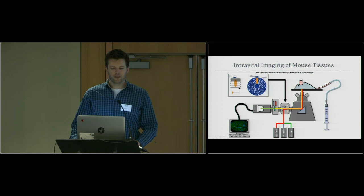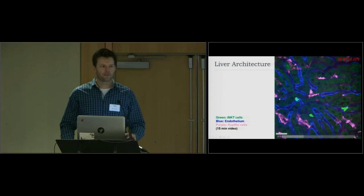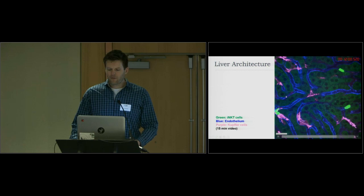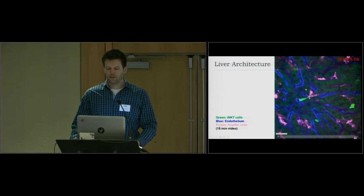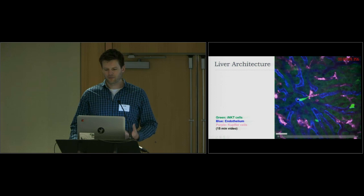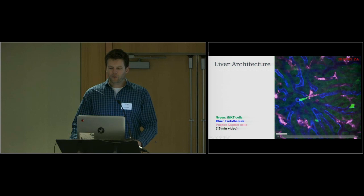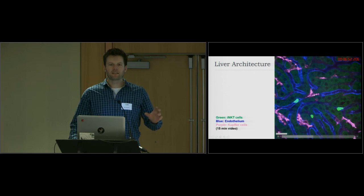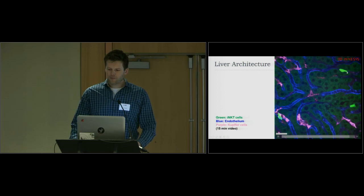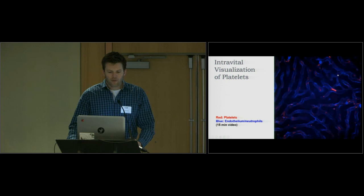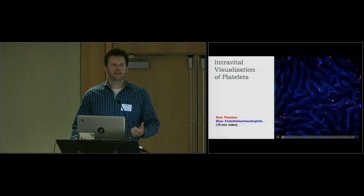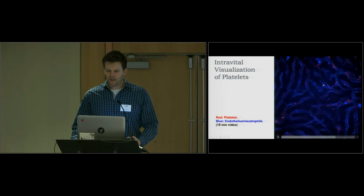We are particularly interested in the liver because it is a very important immune organ. In imaging, dull green represents hepatocytes, and in between are the sinusoids shown in blue — the endothelial cells stained with an antibody against CD31. In purple are the Kupffer cells, which are non-migrating; they sit there waiting for bacteria to flow by and grab them out of the circulation. We can also visualize platelets in the circulation by injecting a fluorescent antibody against CD49B. At baseline, platelets zip through the circulation without adhering to anything.